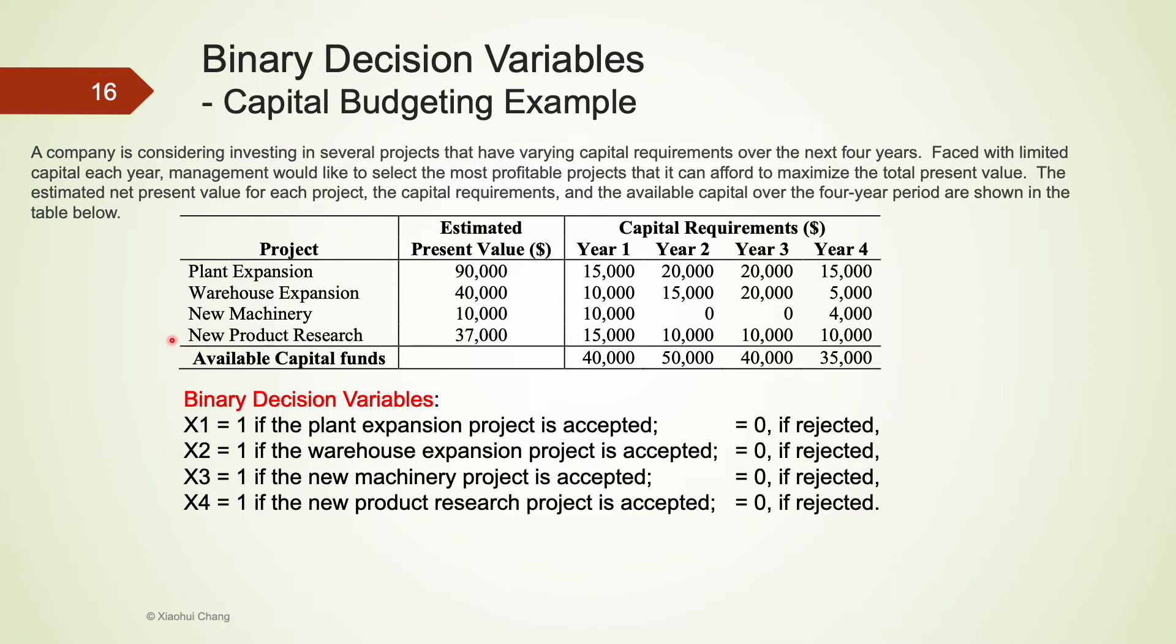We denote these decisions using four binary decision variables, x1, x2, x3, and x4. x1 is only one when we decide to invest in plant expansion project, and zero otherwise.